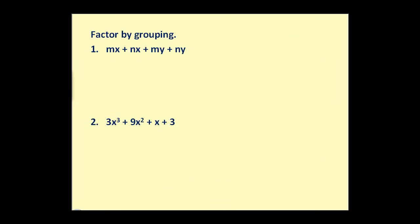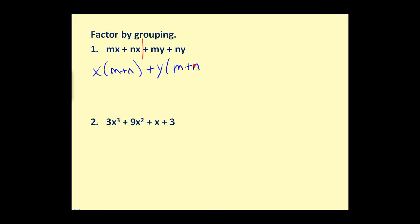Let's give it a try. Step one, we divide the polynomial in half. Next, we look for the GCF of just the first two terms — we can see it's going to be x, leaving us with m plus n. Now we do the same to the second two terms. The GCF of those would be y. Since we factor out a positive y, we write down plus y, and this leaves us with m plus n. We do have a common binomial factor of m plus n.